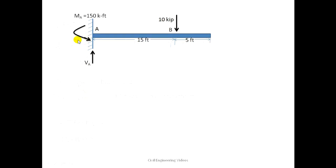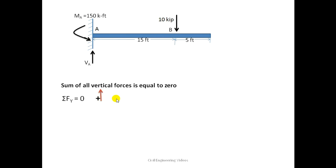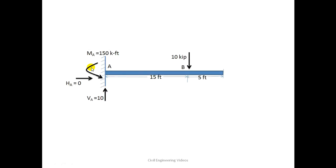Now I will find VA acting upward. For this I will take the sum of all vertical forces equal to zero. Upward force is taken as positive and downward as negative. The 10 kip is acting downward so taken as negative, and VA is acting upward taken as positive. Only these two vertical forces are acting, so their sum equal to zero gives VA equal to 10 kip acting upward.